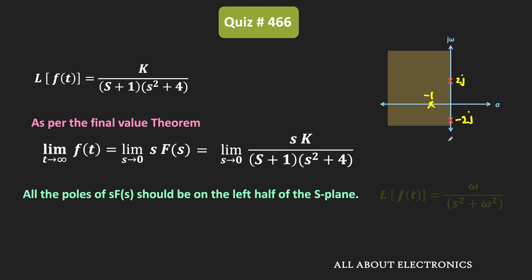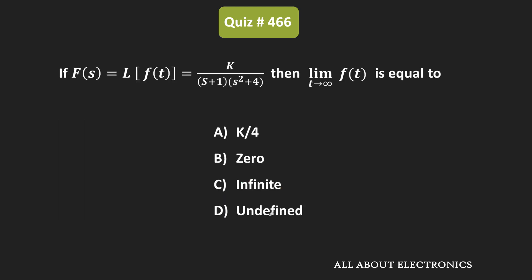Therefore, we cannot apply the final value theorem for this function. Similarly, if we have the Laplace transform of sin(ωt), we cannot apply the final value theorem there either, because those poles are also at ±jω. Since the condition is not satisfied, the value of the function at t = infinity is undefined, and option d is the correct answer.